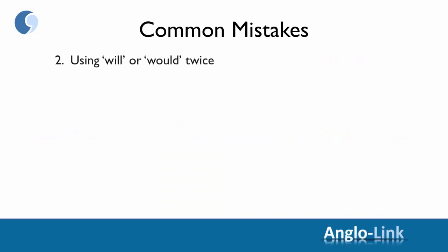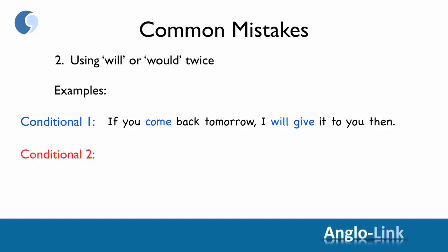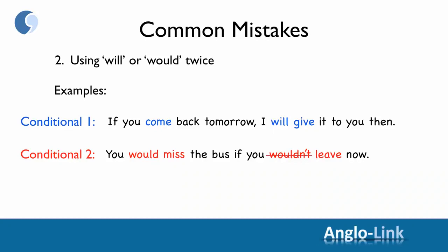Common mistake two is using 'will' or 'would' twice — both in the if clause and in the consequence clause. In conditional one, don't say: 'If you will come back tomorrow, I will give it to you then.' There should be no 'will' in the if clause, so change it to present simple: 'If you come back tomorrow, I will give it to you then.' In conditional two: 'You would miss the bus if you wouldn't leave now' — again, eliminate 'would' in the if clause and use the past simple: 'You would miss the bus if you didn't leave now.'